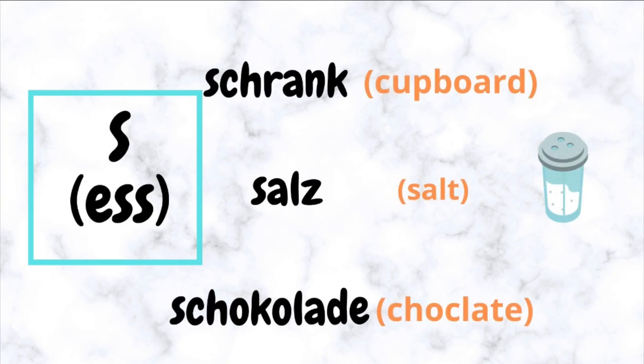S — for example: Schrank, Saals, Schokolade.